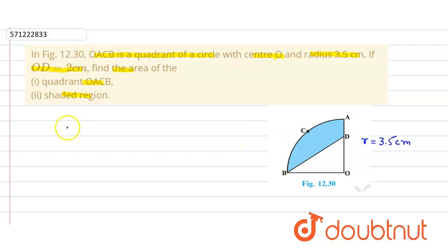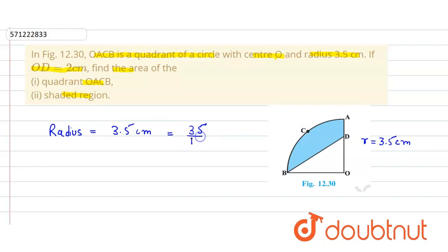First, the radius is equal to 3.5 centimeters. This can also be written as 35 divided by 10 when we remove the decimal. This simplifies by canceling 5 from numerator and denominator, giving us 7 divided by 2 centimeters.